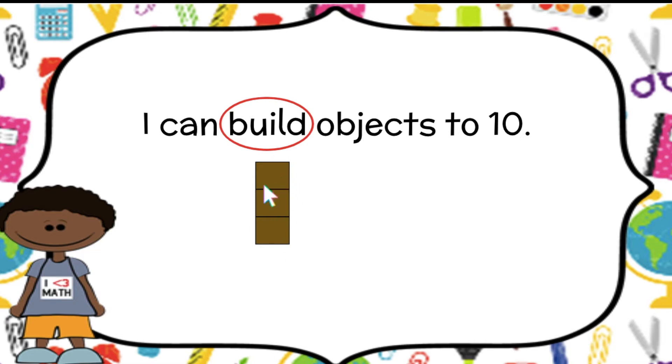And I say three here, but that's not what our I can says we're going to do. We're going to build objects, which are kind of like these blocks here. But we're going to go all the way to the number 10. Can you say 10? Awesome. I can build objects to 10.